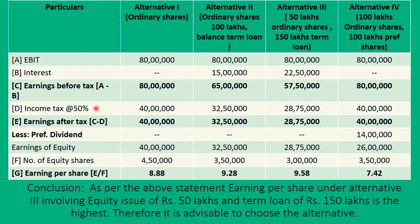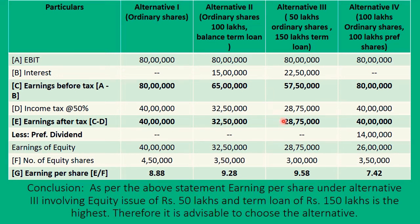Next is income tax. Since this is earnings before tax, we deduct tax at 50%. So 50% of 80 lakhs is 40 lakhs, leaving 40 lakhs. For 65 lakhs, 50% is 32 lakhs 50 thousand, leaving 32 lakhs 50 thousand. For 57 lakhs 50 thousand, 50% is 28 lakhs 75 thousand, leaving 28 lakhs 75 thousand. And for the fourth option, 50% of 80 lakhs leaves 40 lakhs again. The resulting balance is earnings after tax, also called profit after tax or net profit.